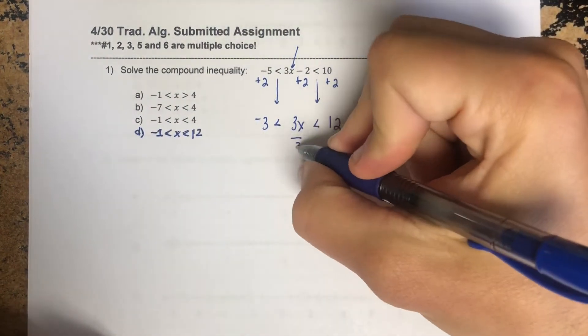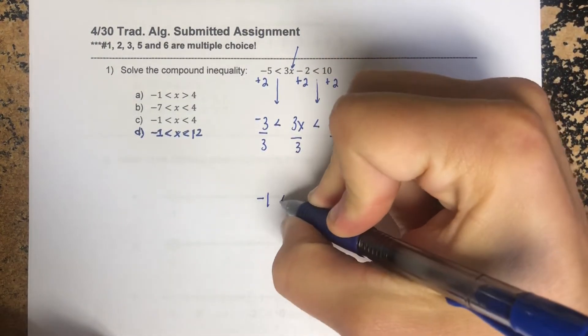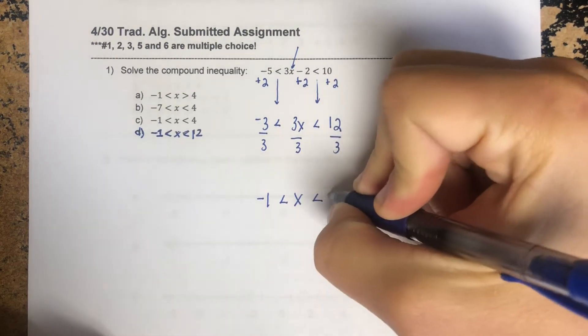And you're going to divide by 3 because I want to try and get x by itself. Negative 1 less than x which is less than 4.